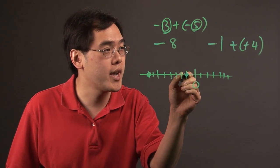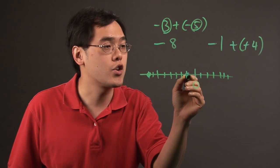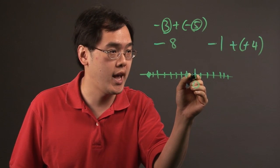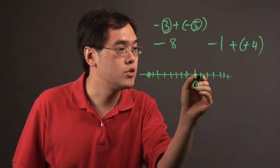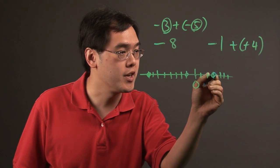Because if you're starting with negative 1, adding 4 means you're going in the other direction. So you're going to go four places. 1, 2, 3, 4, and you're going to end up here.